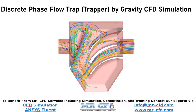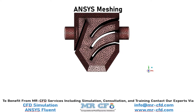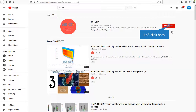In this project, we will simulate discrete phase flow trapper by gravity. The geometry which you can see in this slide is designed in ANSYS Design Modeler software. The mesh type used for this geometry is unstructured.